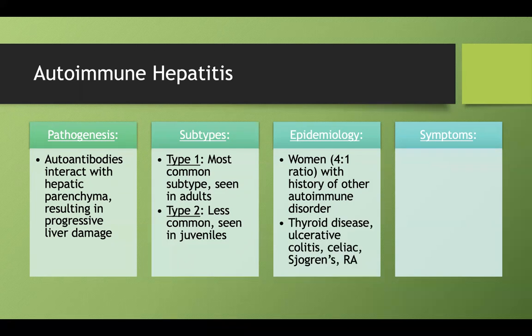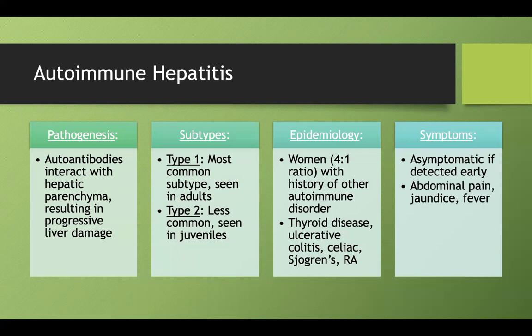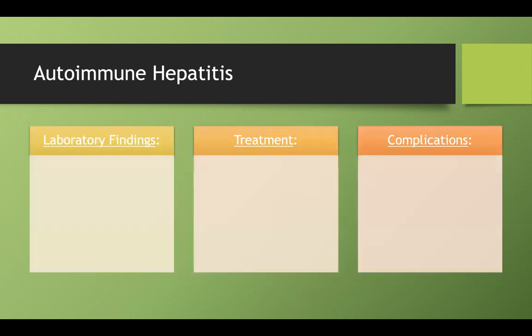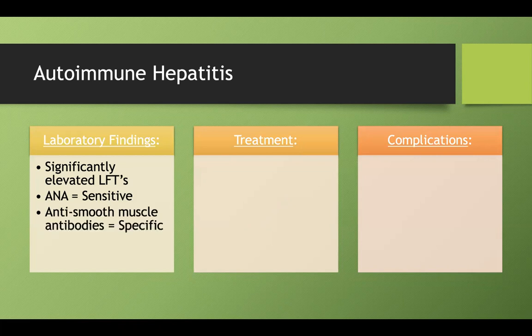The patient may have hypothyroidism, UC, Celiac, Sjogren's, or RA. Symptoms are usually asymptomatic if caught early; if symptomatic, you'll see classic hepatitis symptoms — abdominal pain, jaundice, fever. On labs, you'll get significantly elevated LFTs; ANA will be sensitive, and anti-smooth muscle antibodies will be more specific.